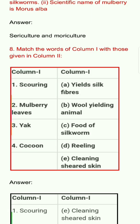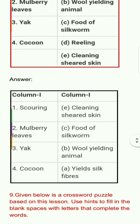Question 8: Match the words of column one with those in column two. Column one: scouring, mulberry leaves, yak, cocoon. Column two: a) yield silk fibers, b) wool-yielding animal, c) food of silkworm, d) reeling, e) cleaning, sheared skin. Answer: scouring — cleaning/sheared skin; mulberry leaves — food of silkworm; yak — wool-yielding animal; cocoon — yield silk fibers.